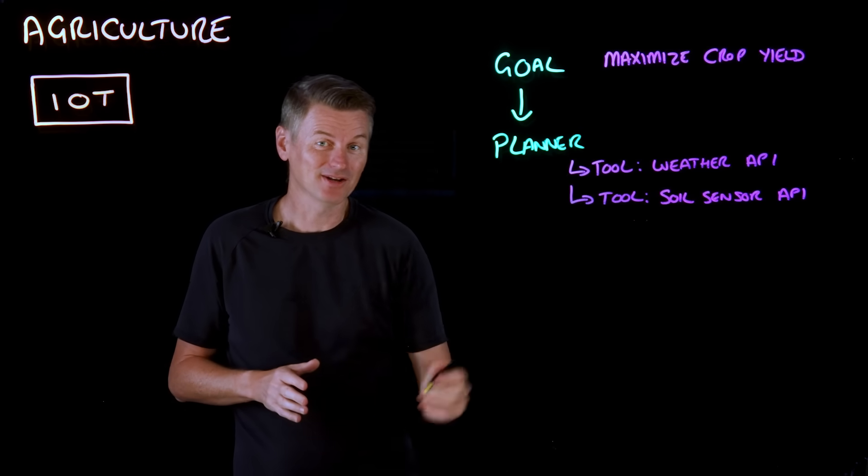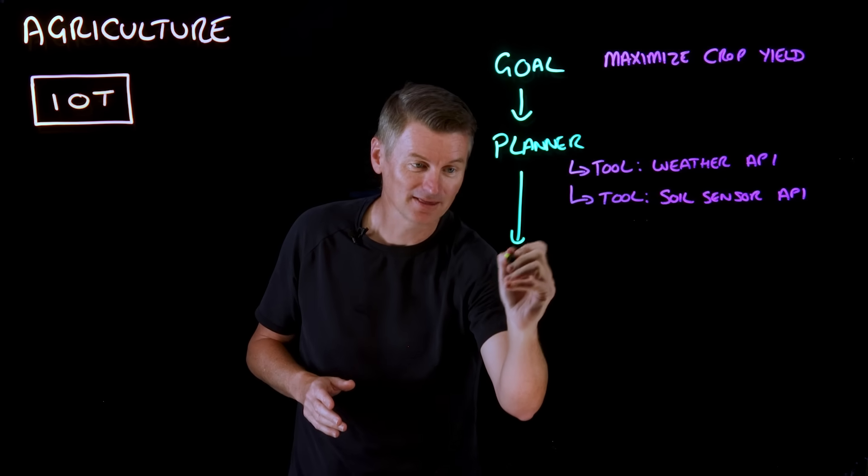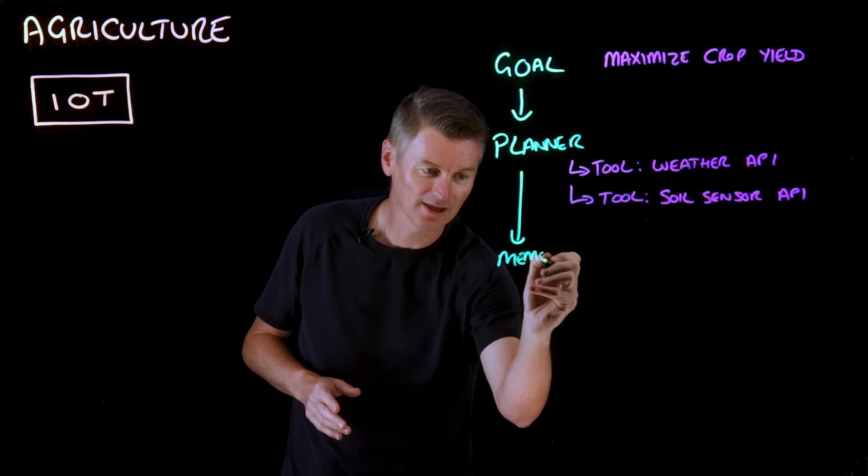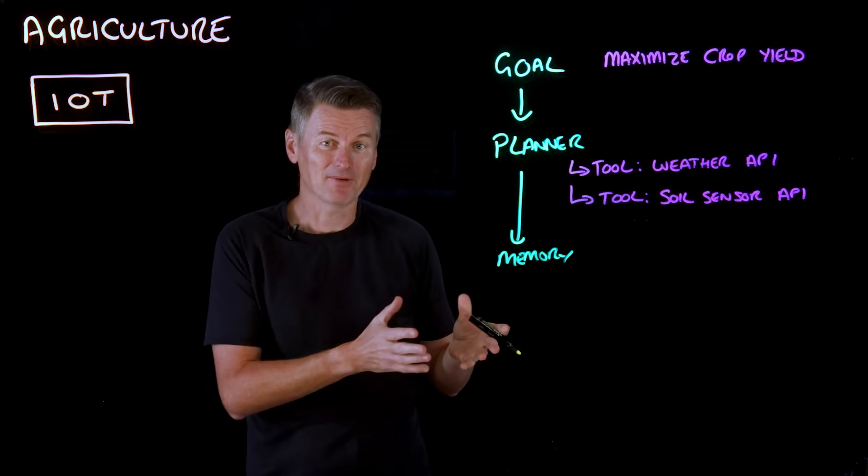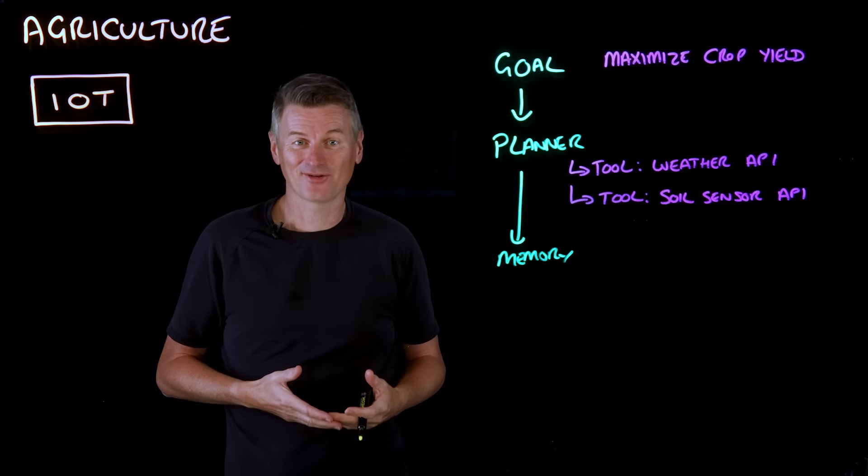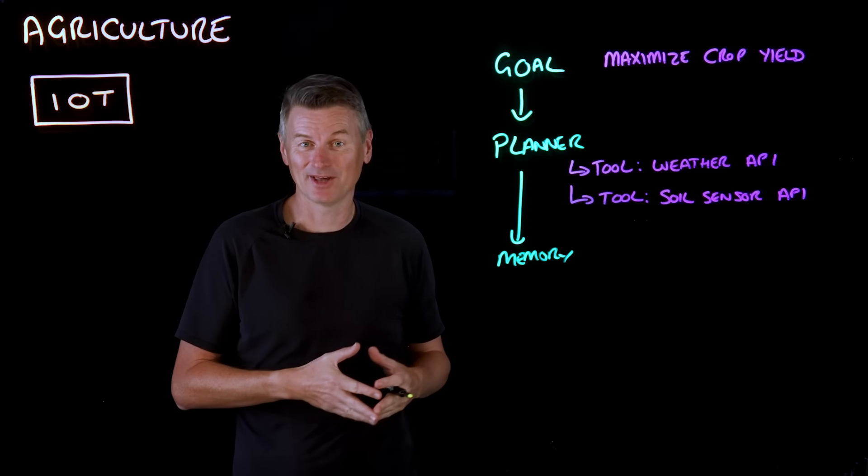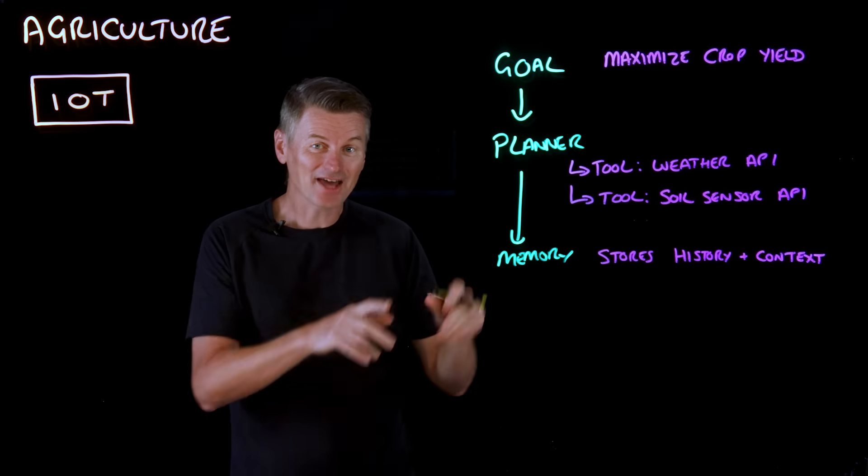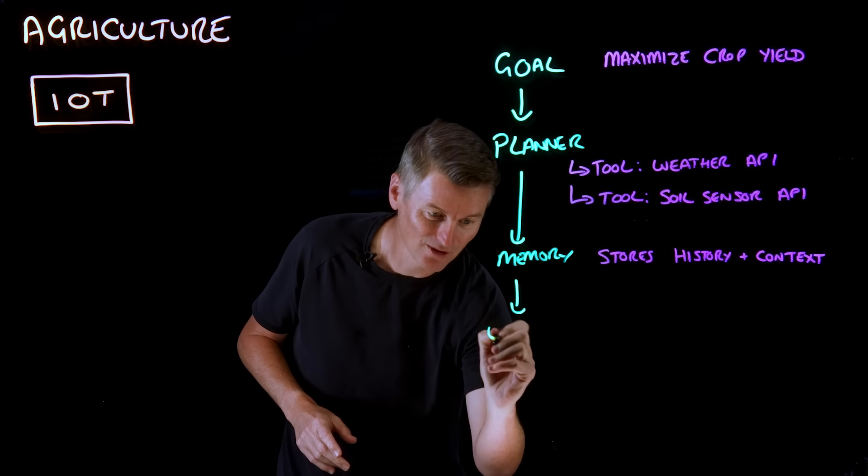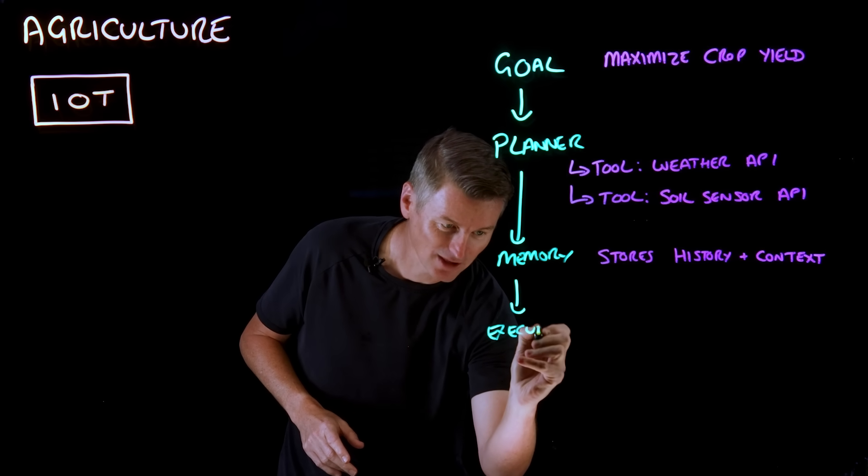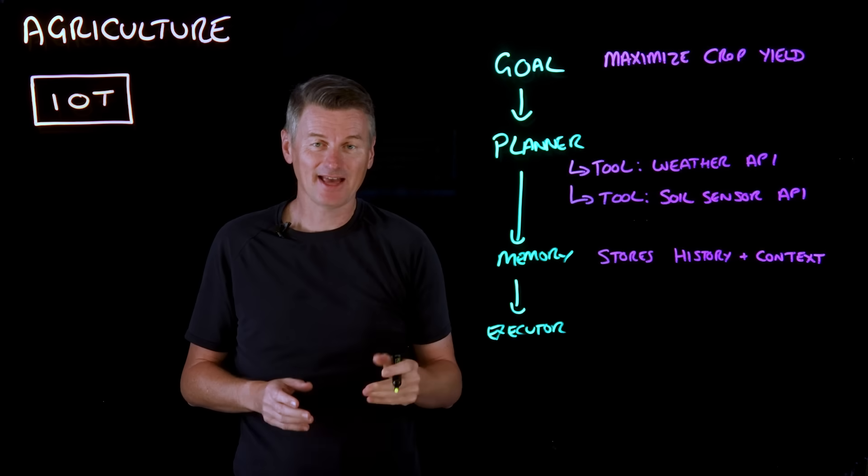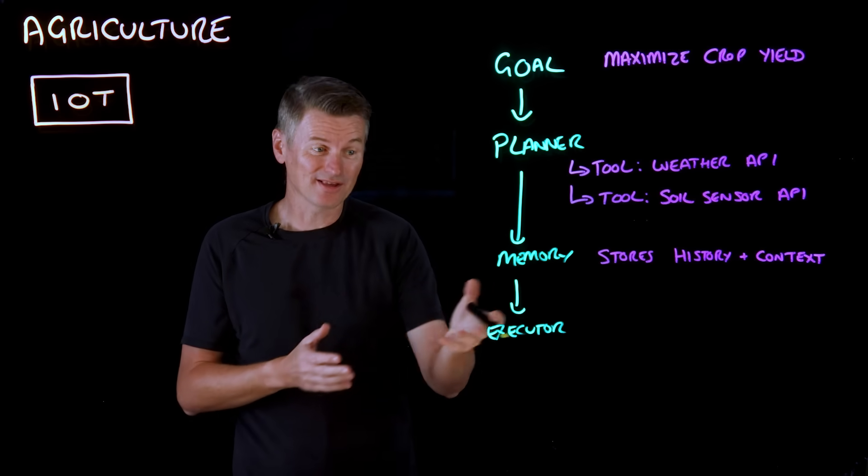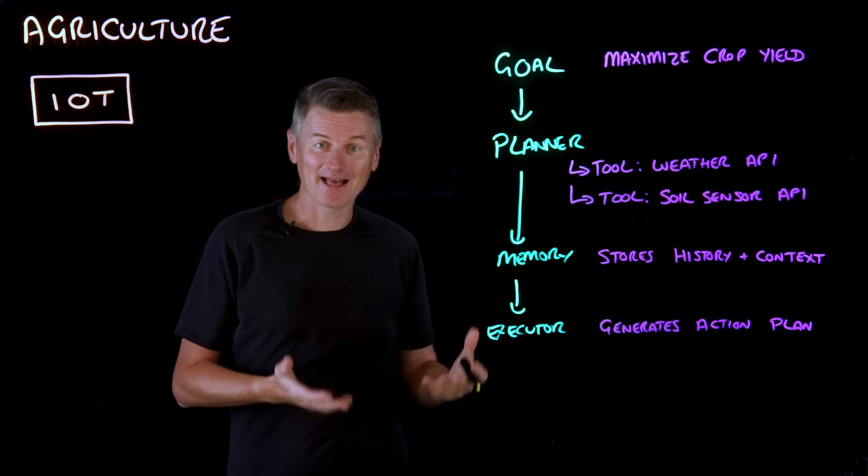Now that information is then combined with whatever is stored in the memory. That stores past actions, history, and other contextually relevant information like the date of the last irrigation. And that all feeds into the executor, which is the next stage. That's where an agent uses all of this information to generate an action plan.